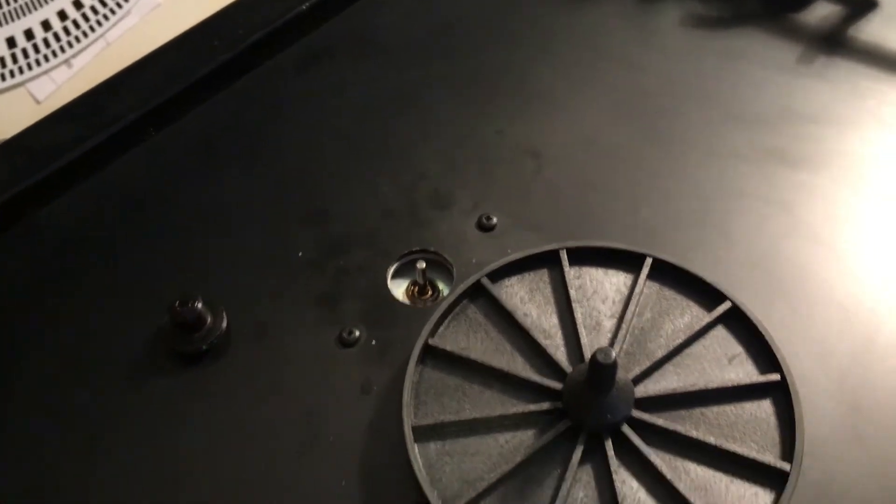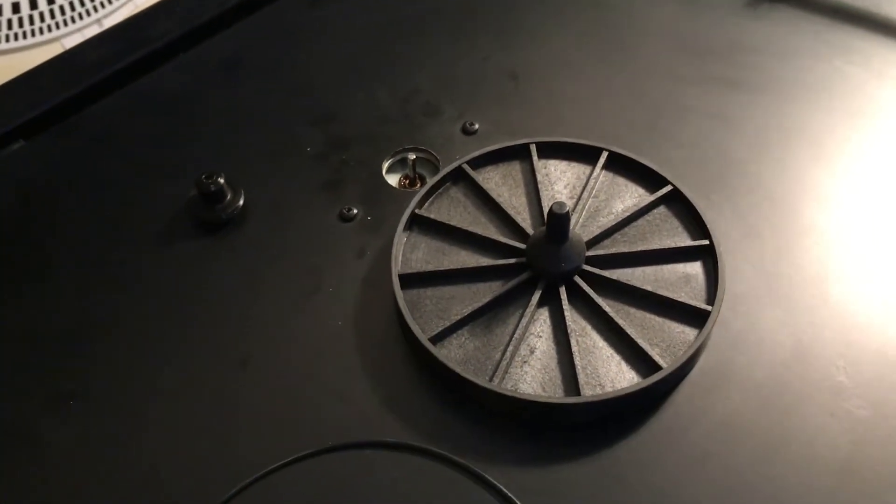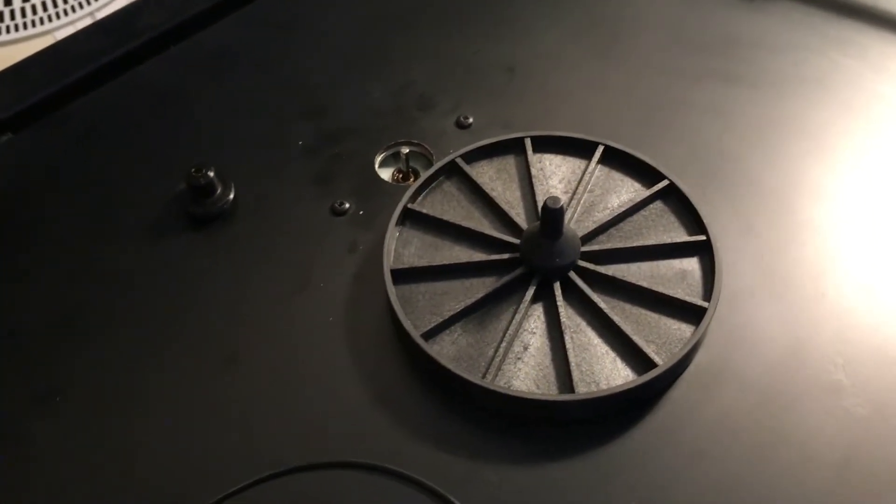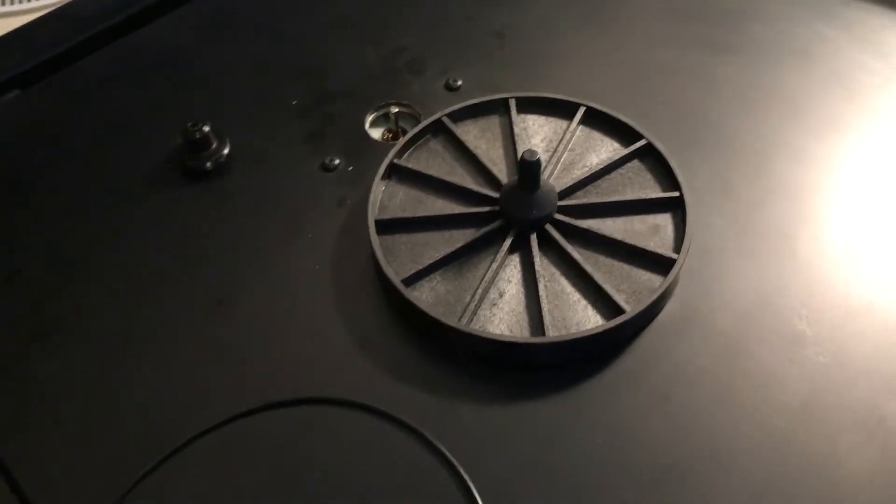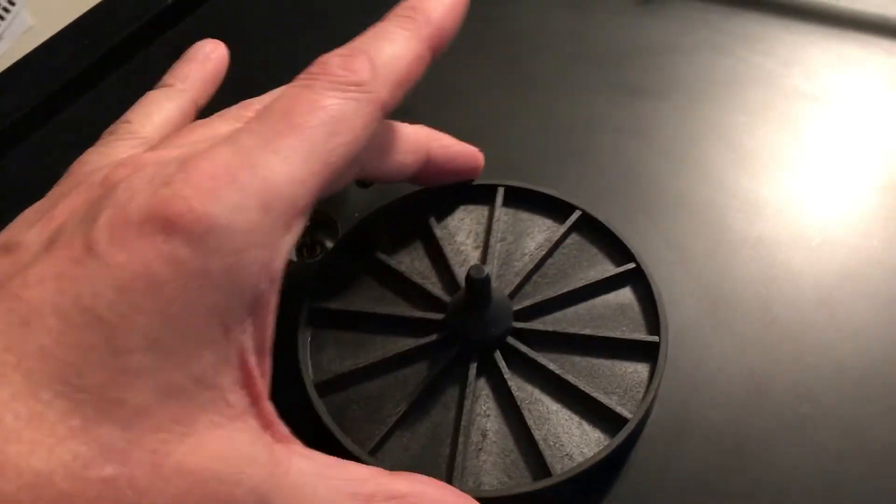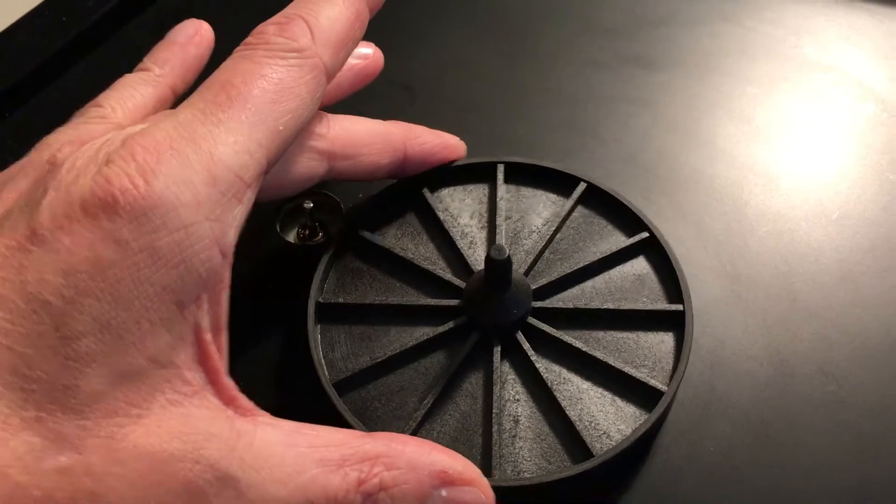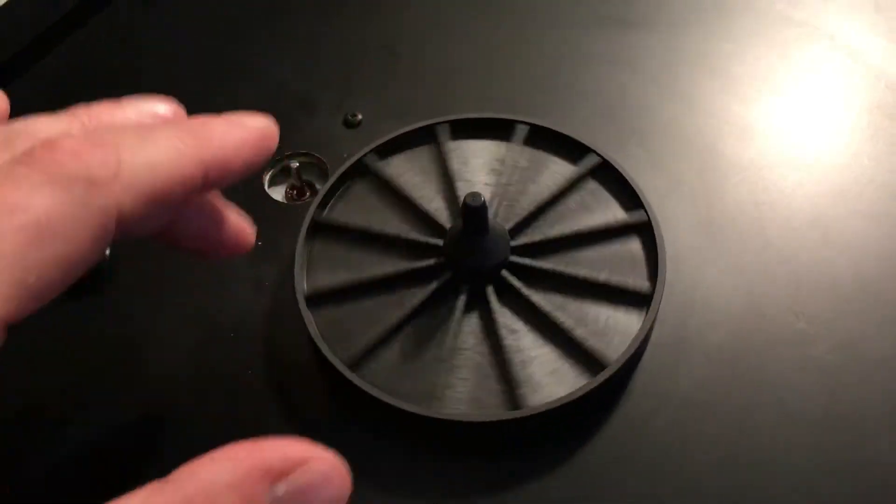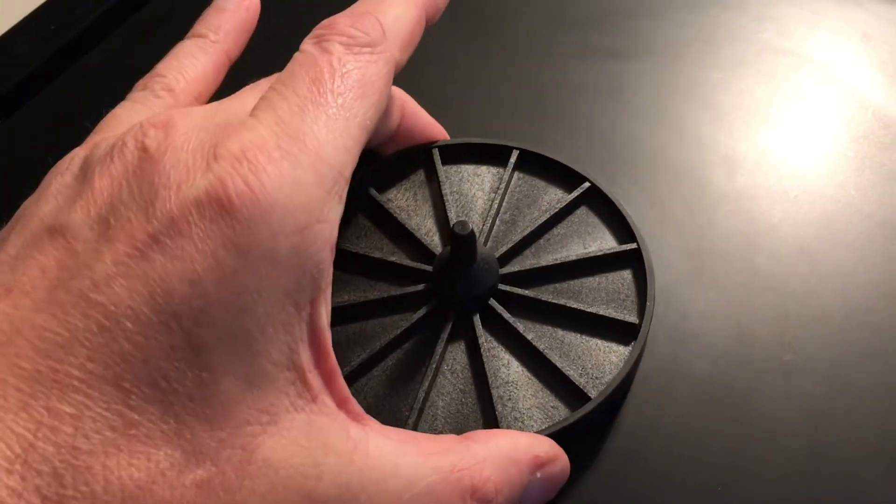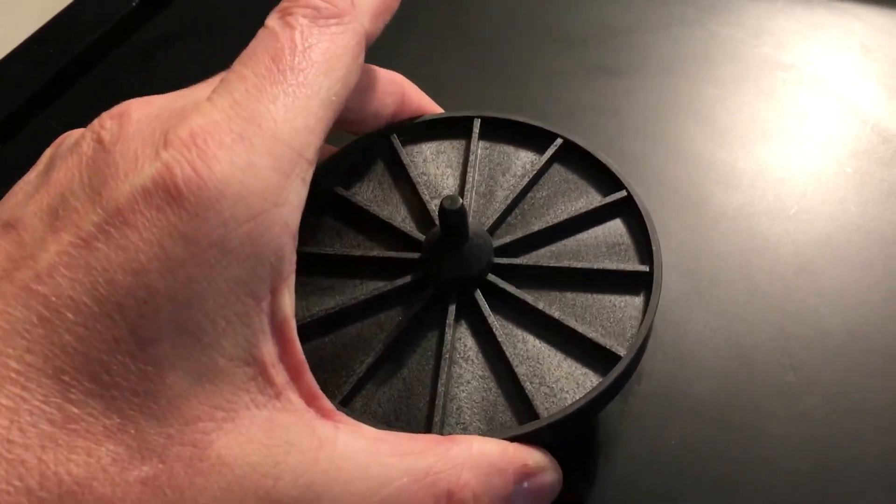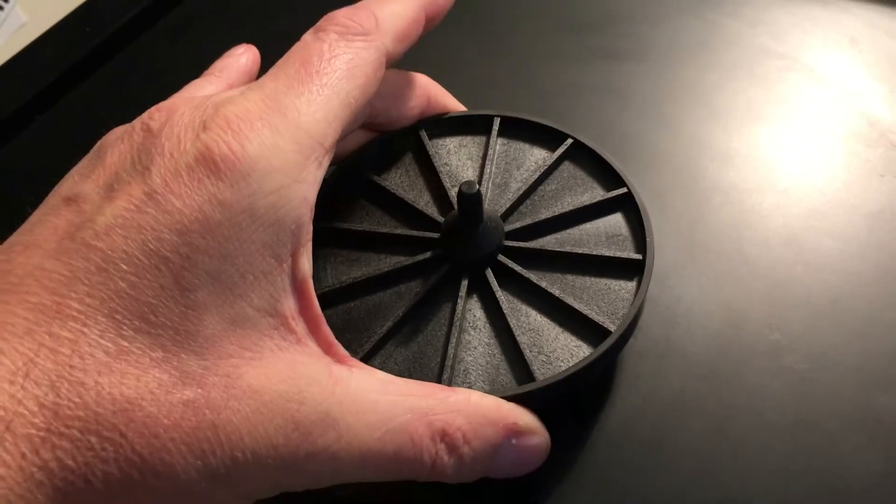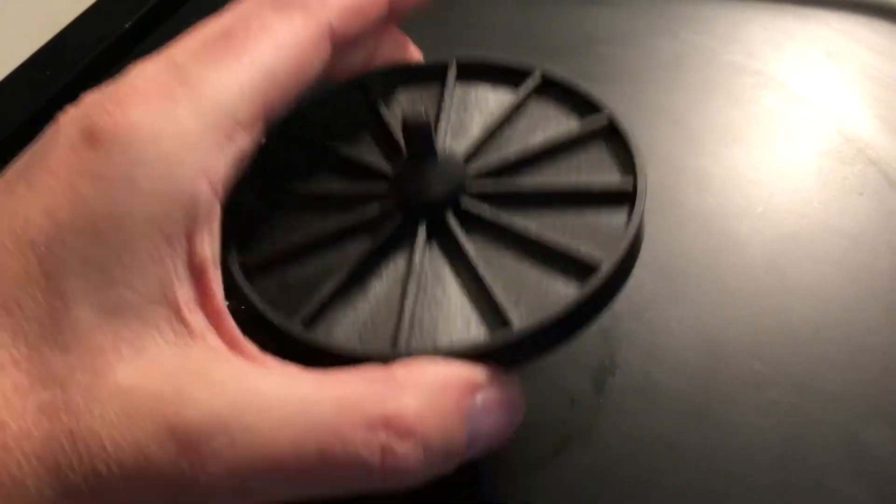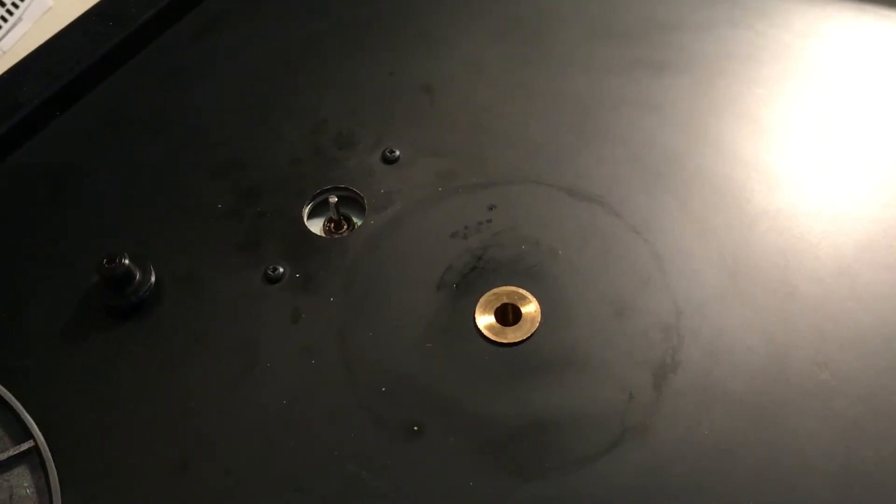The other thing to check, and this tends to be a thing, if you've moved house, or you've packed the deck, or you've taken the deck apart in any way, if you've ever had the subplatter out, don't get this very often, we used to get it, years ago we used to get this, but what you need to check, if you've never had this part out, then don't worry about it, it's not what it is, but if you've ever taken this out, and you're not going to be able to see this at all, so I'm going to have to talk you through it.